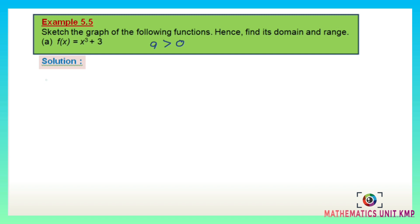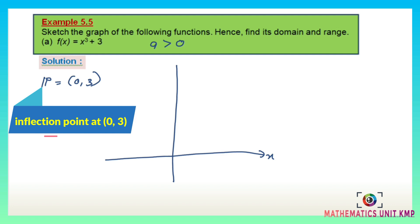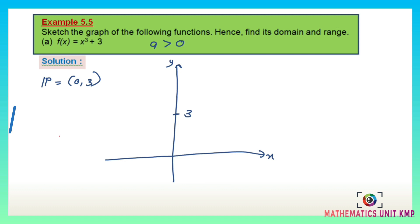For this cubic function, the inflection point is at (0, 3). To sketch the graph, we identify the x-intercept, y-intercept, and inflection point at (0, 3). At the right the graph is concave up and at the left concave down. Label the graph f(x) equals x³ plus 3.